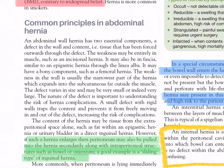An abdominal wall hernia has two essential components: a defect in the wall and content — tissue forced outwards through the defect. The weakness may be entirely in muscle, such as an incisional hernia; in fascia, such as an epigastric hernia through the linea alba; or have a bony component, such as a femoral hernia. The weakness in the wall is usually the narrowest part of the hernia, which expands into subcutaneous fat. The defect varies in size and may be very small or very large.